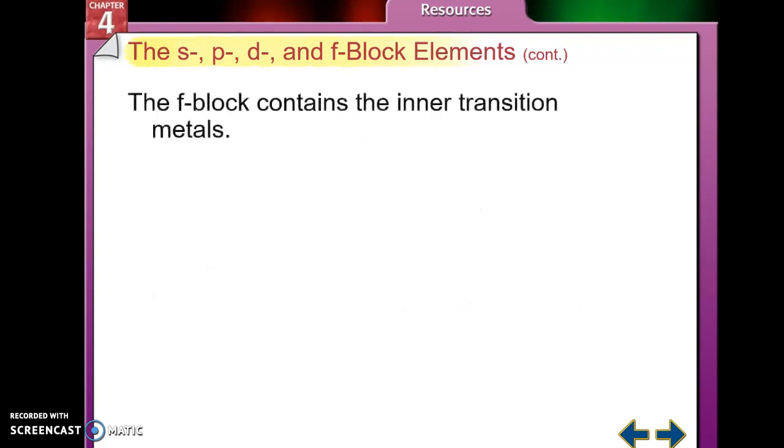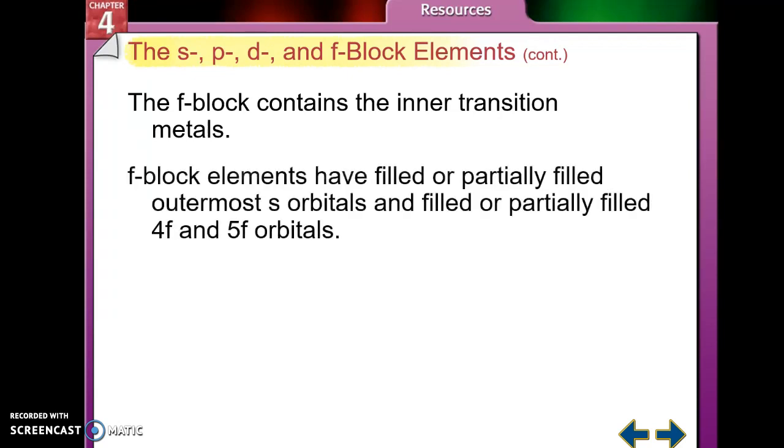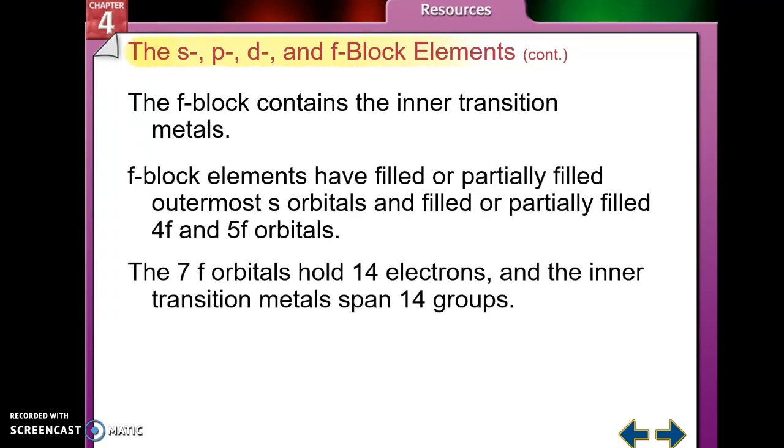And then you've got the f-block and it contains the inner transition metals, the lanthanides and the actinides, and it is conveniently 14 groups wide because it can hold up to 14 electrons. Thanks so much for your attention and I will talk to you soon. I'll see you soon. Thank you.